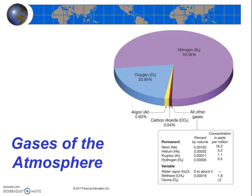One final note about the variable gases: look at the volumetric percents listed for water vapor — zero to four percent. That's a pretty wide range. It's often present as a trace gas, but sometimes it can overtake argon and be the third most abundant gas in the atmosphere. Consider when and where water vapor is likely to be sparse, and when and where it's likely to be abundant.